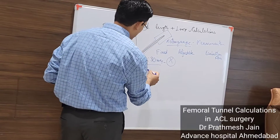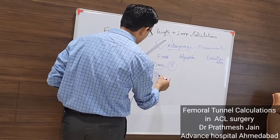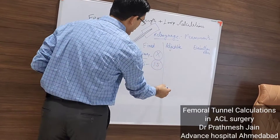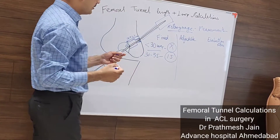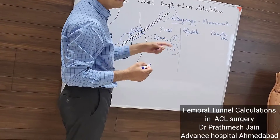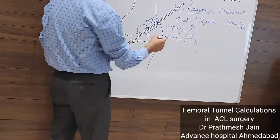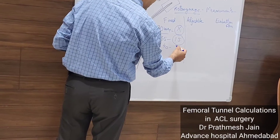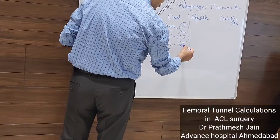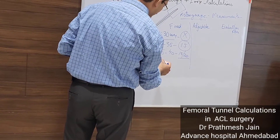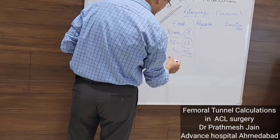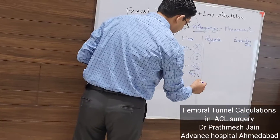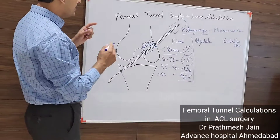If your tunnel length is between 30 to 35 mm, use a 15 mm button. If your loop length is 35 to 40 mm, you can use either a 15 or a 20 mm button. If your length is more than 40 mm, it is recommended to use either a 20 or 25 mm button.